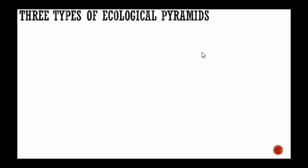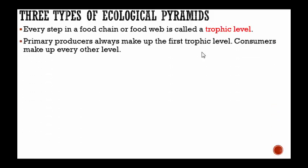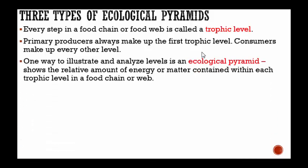There are three types of ecological pyramids. Every step in a food chain or food web is called a trophic level. Primary producers always make up the first trophic level, and consumers make up every other level. One way to illustrate and analyze these levels is an ecological pyramid, which shows the relative amount of energy or matter contained within each trophic level. The three types are pyramids of energy, pyramids of biomass, and pyramids of numbers.